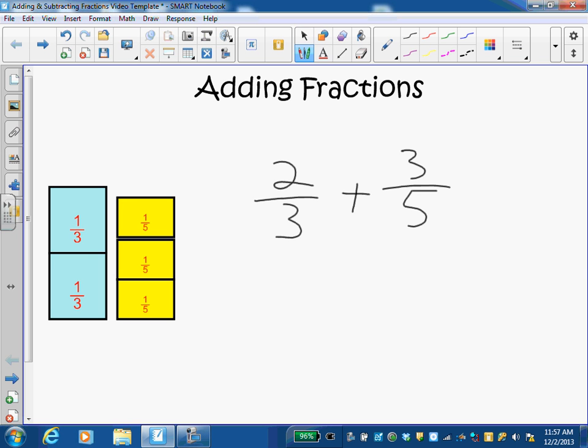Students already know how to use cross multiplication to compare fractions. We're going to take what we've already learned about cross multiplication and extend that further into solving addition problems with fractions with unlike denominators. First I'm going to go from five cross to two, five times two is ten.